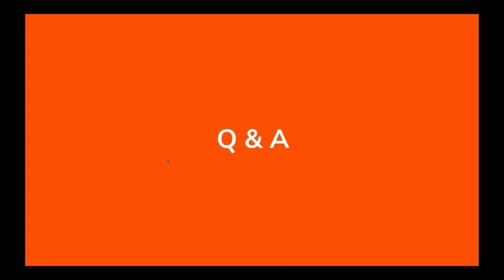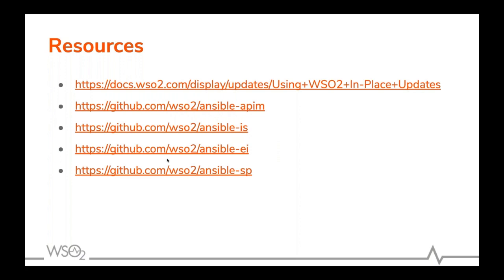We will move on to our resources slide. The first link has WSO2 in-place update tool documentation — please go through the features and capabilities. The rest of the links are WSO2 Ansible resources — use them, go through them, contribute to them, and if you have any questions feel free to email us, create a support ticket, or create a GitHub issue. Please join us in our next webinar on continuous update delivery with AWS, where Chin and Safana will be presenting. Thank you very much for joining us. Have a nice day, bye!